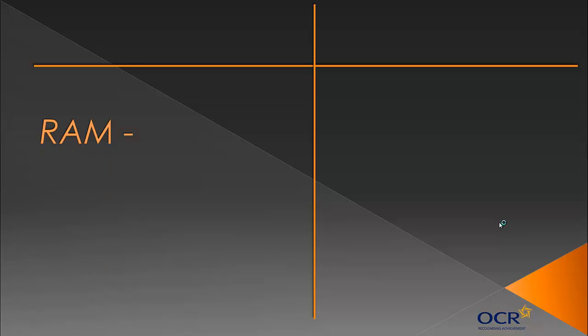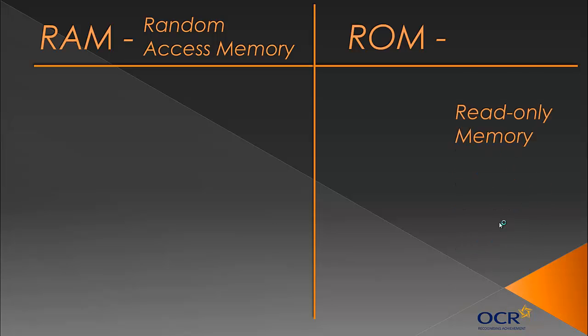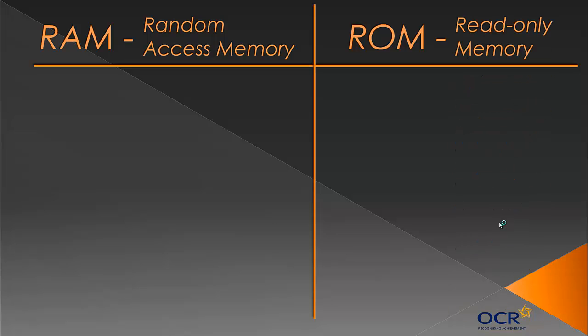So it's good to consolidate what you've read. Firstly, we're going to compare two types of memory which people like to compare. I think they're actually quite different — they are sort of opposites in a sense. RAM stands for random access memory and ROM stands for read only memory, two types of memory you've got to know all about.